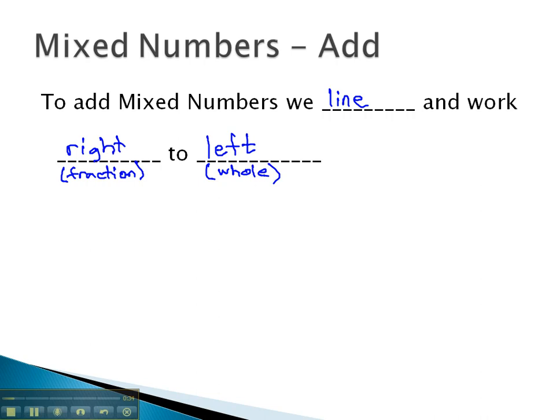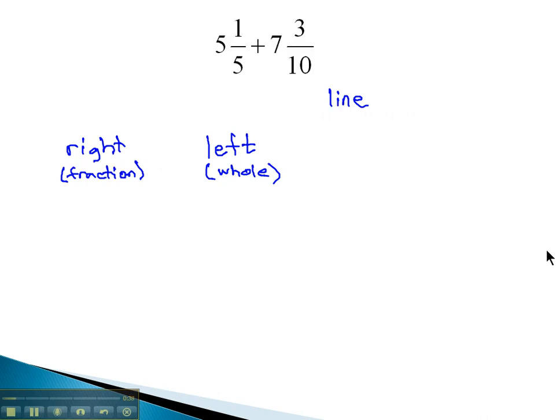Let's take a look at an example where we work right to left to add some mixed numbers together. First, we have to line up, so we'll line up the 5 and 1 fifth plus the 7 and 3 tenths.